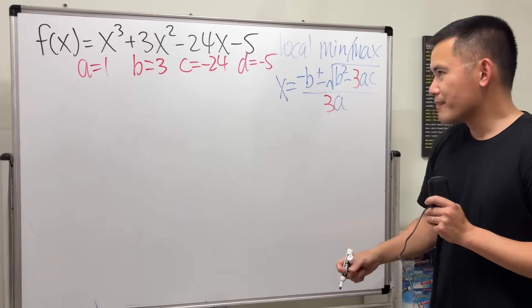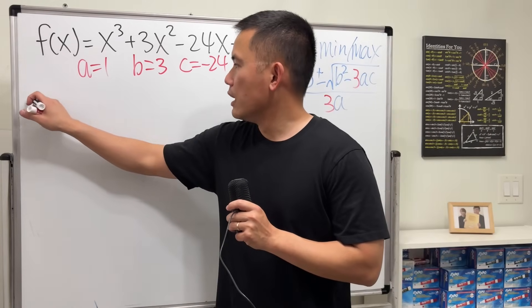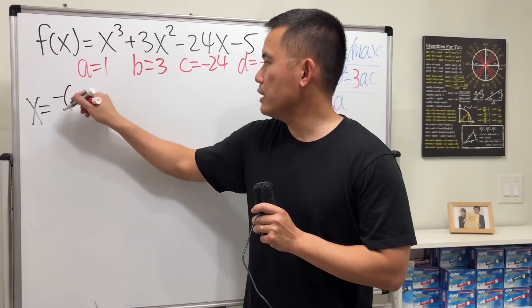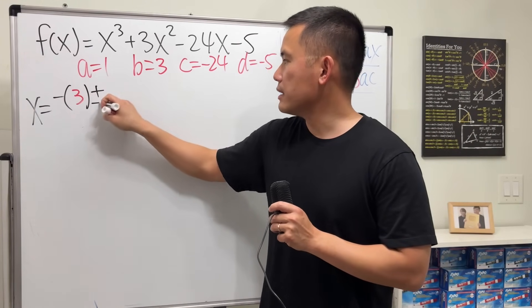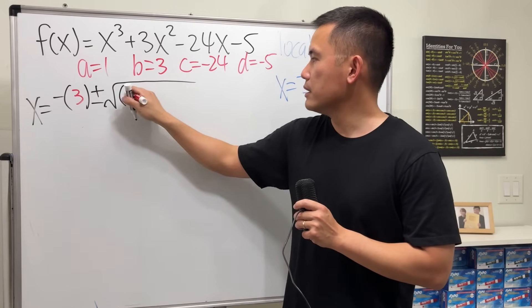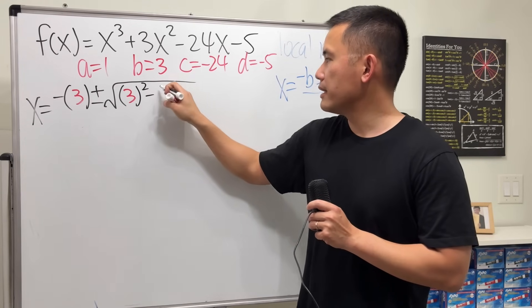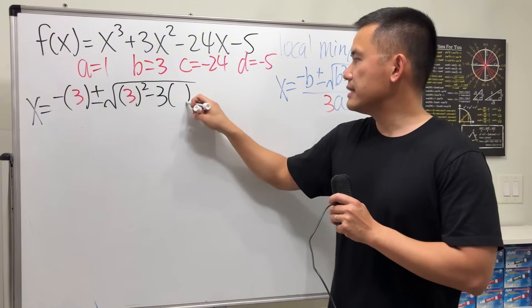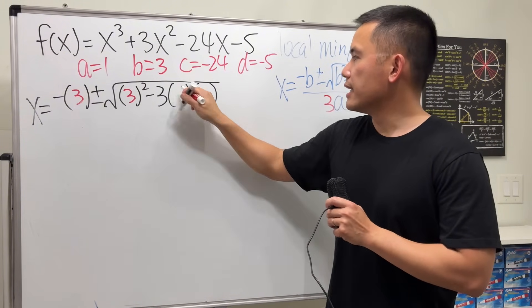Anyways, let's just go ahead and work this out. x will be negative b, which is 3, and then plus or minus square root b is 3 squared minus 3 and then ac, a is 1 and c is negative 24, all over 3 times a.